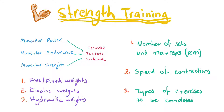Remember that we have three different types of contractions that we can use when training for strength — this is what we learnt in Year 11. Isometric contractions are the ones that occur when tension is generated in the muscle as it attempts to overcome a load but there's no shortening of the muscle. For example, pushing against a wall is an isometric contraction.